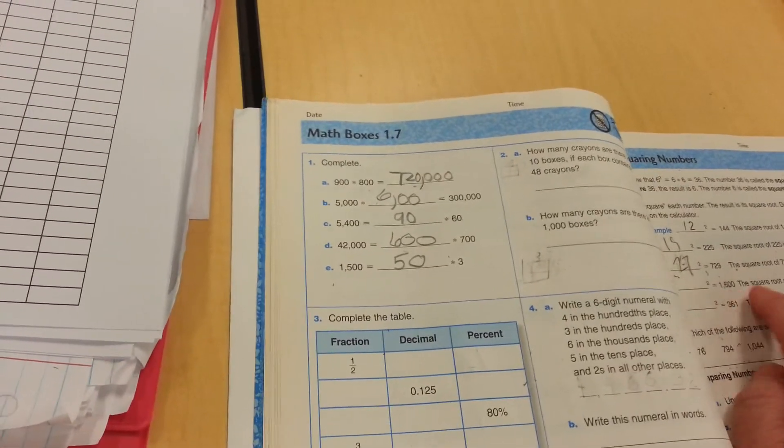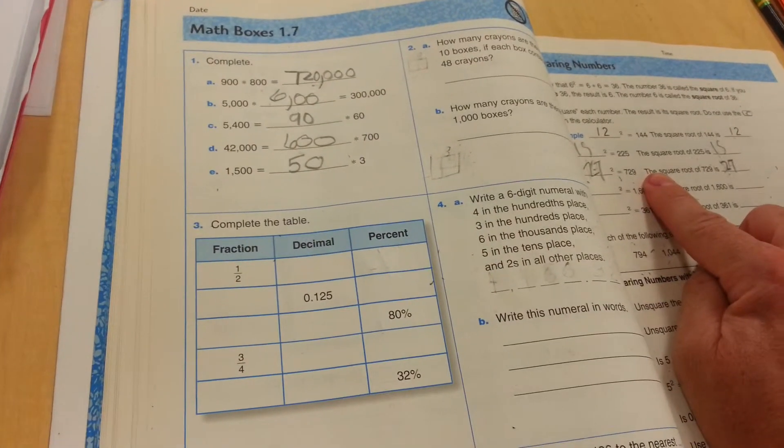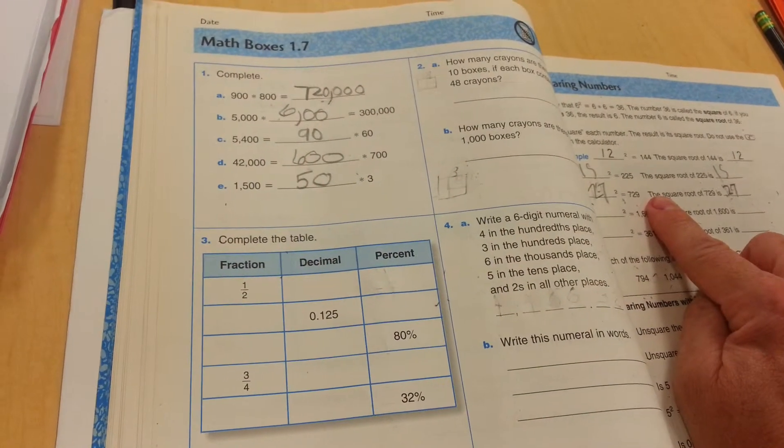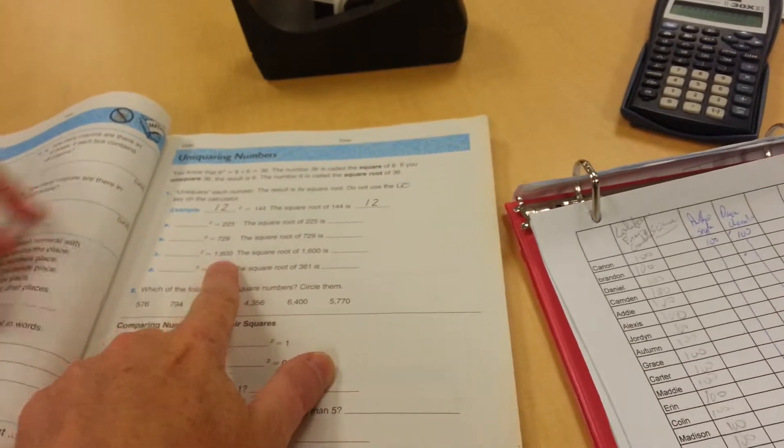So this one's easy. Cover up the 1600. What times itself is 16? 4. So let's add a 0. 40. Let's check to see if 40 works for this one. Indeed it does.